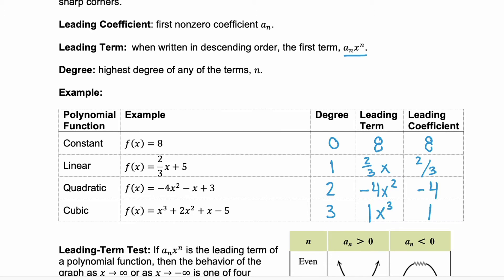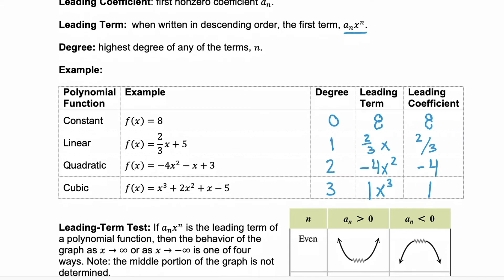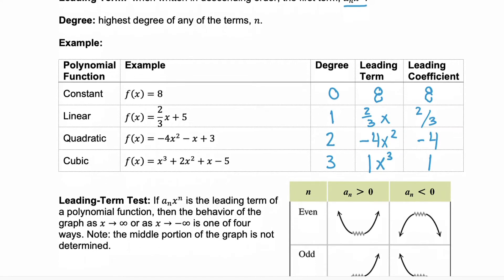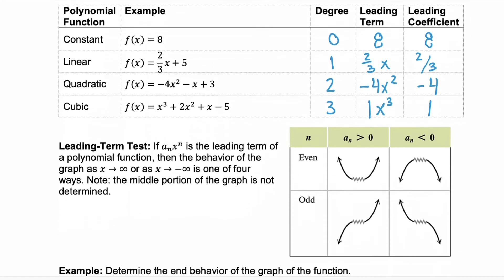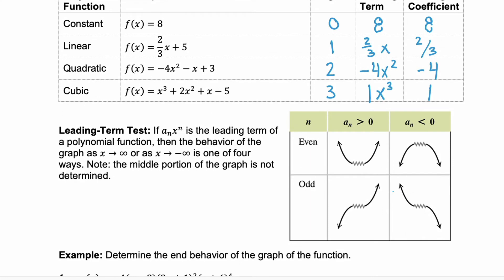Now, why do we need to know this? Well, the degree and the leading coefficient help us determine the end behavior of the graph. That's what this leading term test is. It's telling us what this chart is showing. So, on the top here, you see a_n is greater than 0, a_n is less than 0. Remember, this is our leading coefficient.